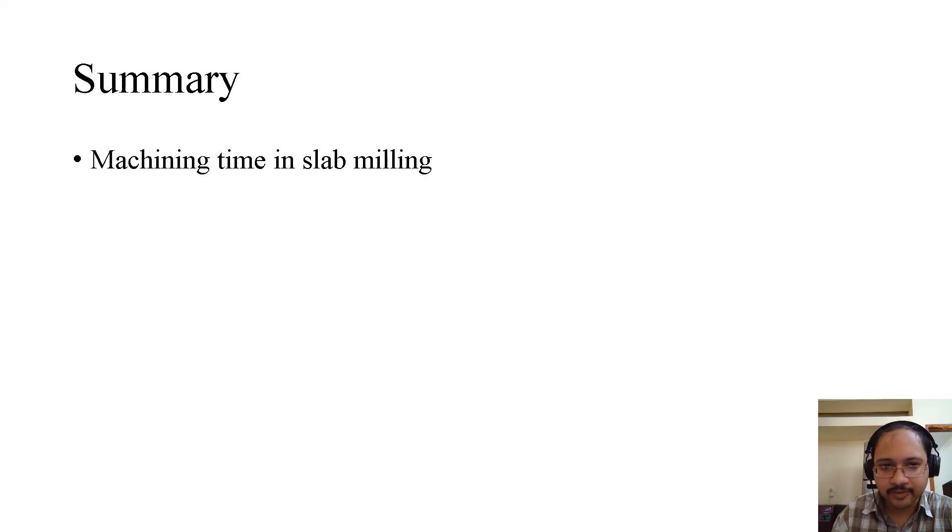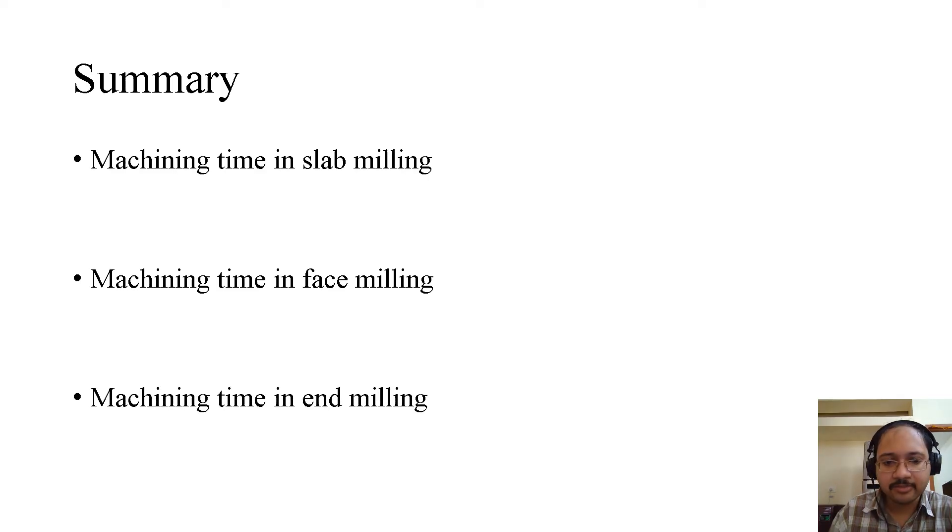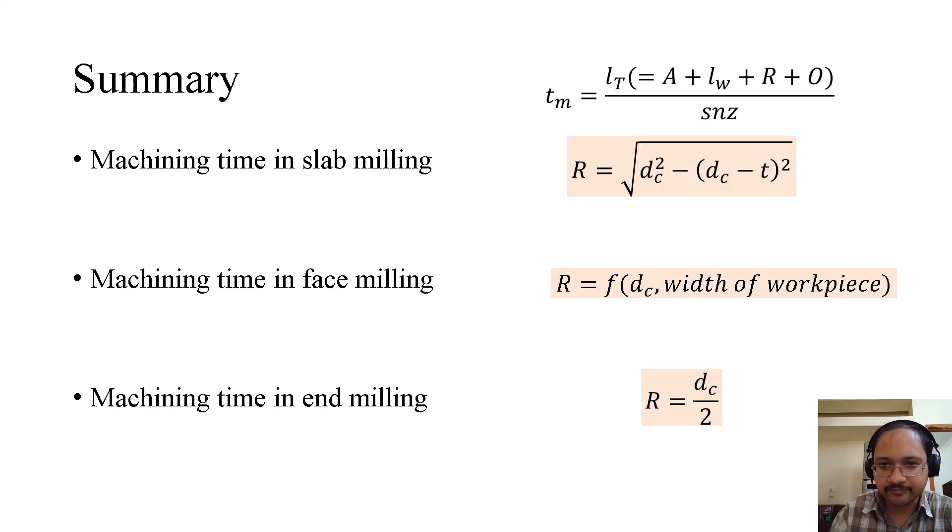Now to summarize what we have learned: machining time in slab milling, machining time in face milling, machining time in end milling. These are the corresponding expressions. The main formula for machining time remains the same. What differs is the value of R in all three cases.